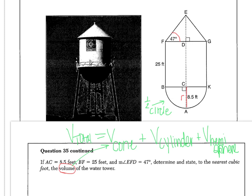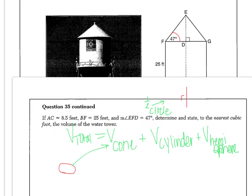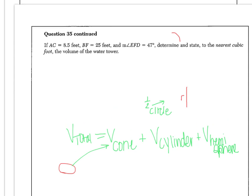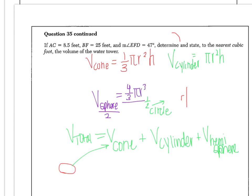Looking at the volume formulas on the reference sheet, the volume of a cone is equal to one-third pi r squared times the height. The volume of a cylinder is equal to pi r squared times the height. And the volume of a sphere is four-thirds pi r cubed, but we're dividing by two because we have a hemisphere.